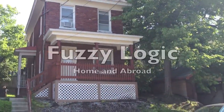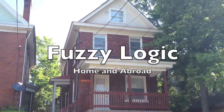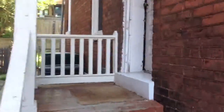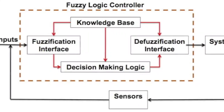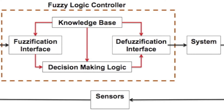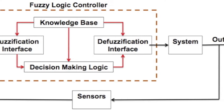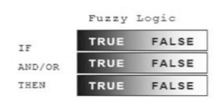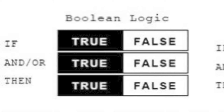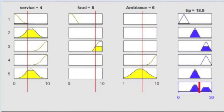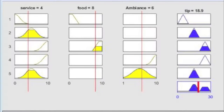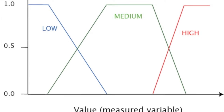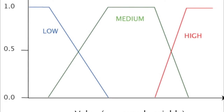What if I told you that there was a better way to make computers emulate human reasoning, exactly how humans interact with the world at home and abroad? I'm talking about fuzzy logic, which is a mathematical approach to problem solving where a variable can belong to a fuzzy set on a continuum from 0 to 1. This is advantageous over traditional binary logic — 0 or 1 — because the varying degrees of truth handle uncertainties better than traditional binary logic.